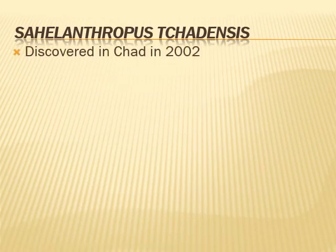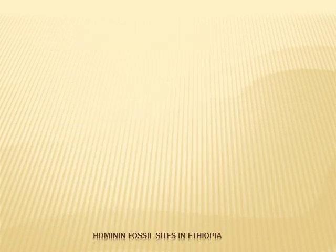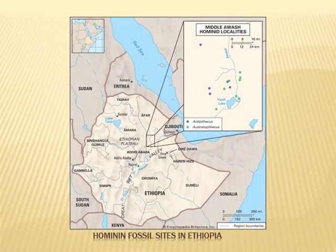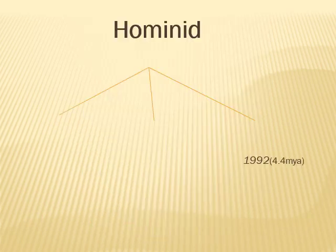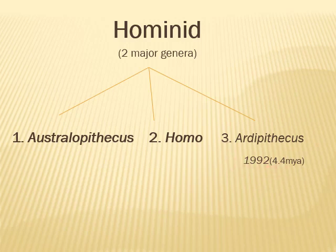Sahelanthropus tchadensis was discovered in Chad in 2002 and existed about 7 million years ago. It is the oldest known hominid. This map indicates the fossil excavation sites of hominids in Ethiopia. Hominids diverged into three genera, of which two were major: Australopithecus and Homo. The third, minor genus was Ardipithecus, which existed about 4.4 million years ago and was discovered in 1992. This concludes the overview of human evolution from its ancestors. Thank you very much.